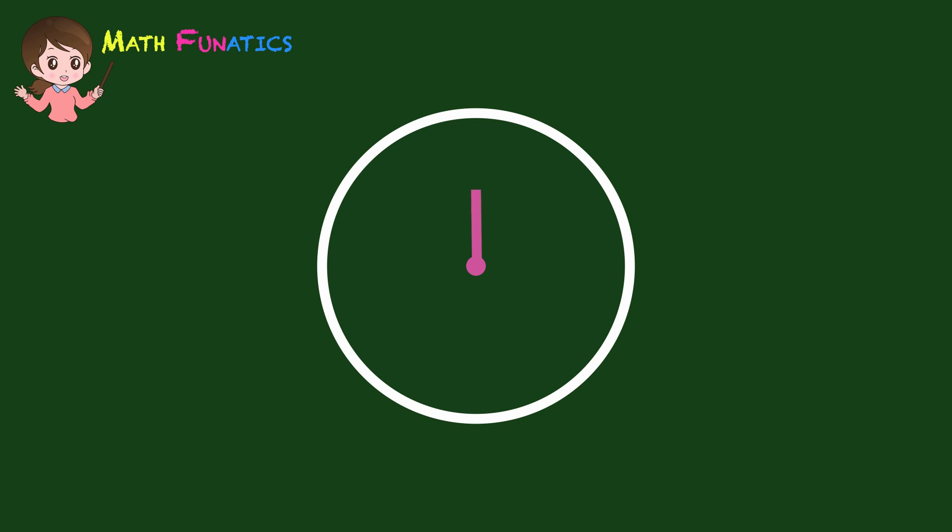This distance from the center to any point on the circle is called the radius. A straight line whose endpoints both lie on a circle is called the chord. The longest chord in a circle is called the diameter. A diameter is twice a radius.